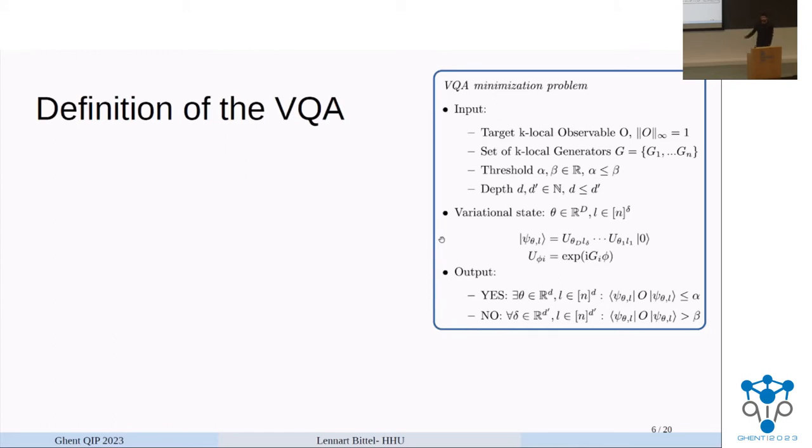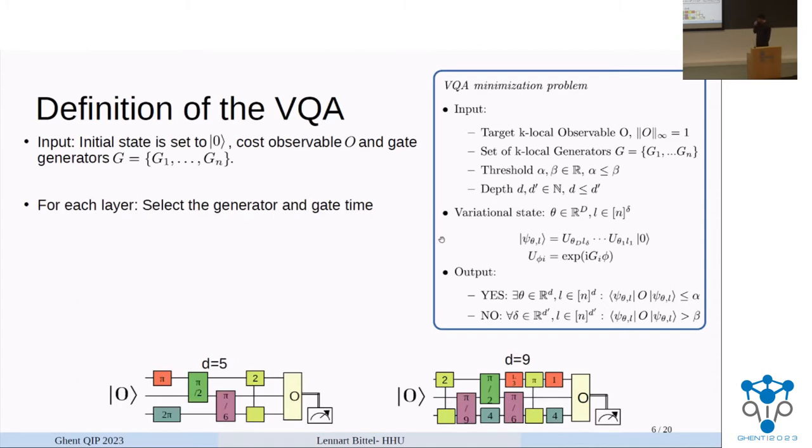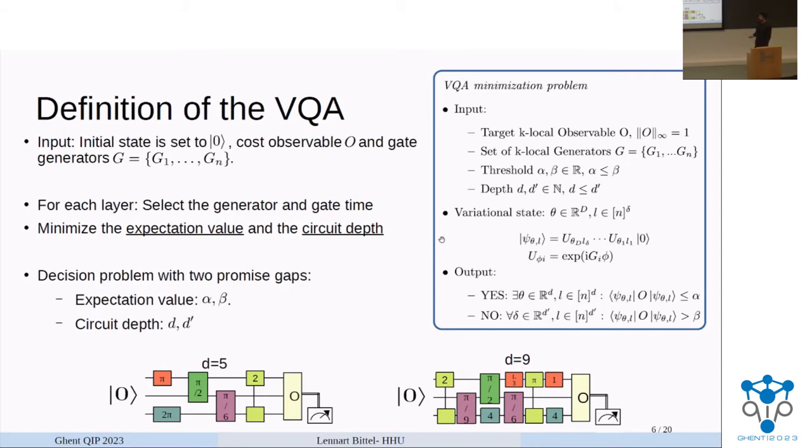So for our purpose, we are looking at it from a complexity side, so we actually have to define a proper VQA instance. The input of a VQA is an initial state, which we can assume to be the all zero state, then the cost observable we would be interested in, as well as the set of gate generators. Since we want to optimize the depth, we also make the structure be that we can effectively select the gate generators for every layer. This promise problem is now describing a minimization problem both in the expectation value of our observable, but also in the depth of the circuit we are running, which we do by having two promise gaps in the decision version.